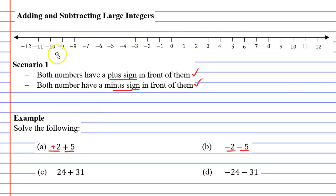Two plus five, we don't really need the number line for that. Two plus five is seven.